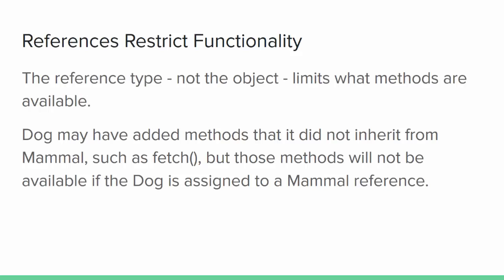A critical thing to know about using polymorphic references is that the reference type decides what methods are available. The object at the other end of the reference may have additional methods, but the only methods available are those that were defined in the reference type. Dogs may be able to fetch, but if a Dog is stored in a Mammal reference, that method is off limits — the Dog can only do things that all Mammals can do.